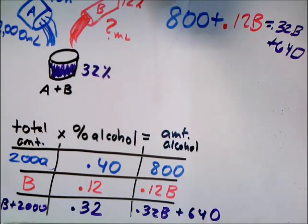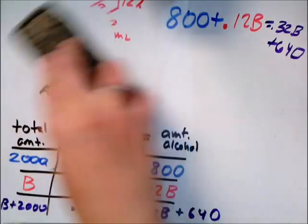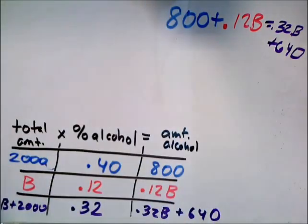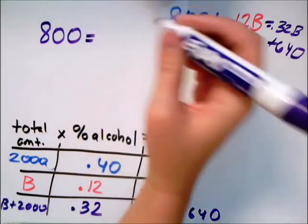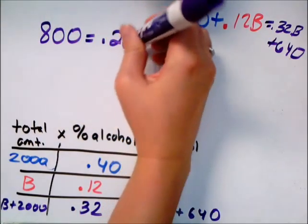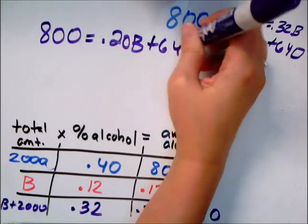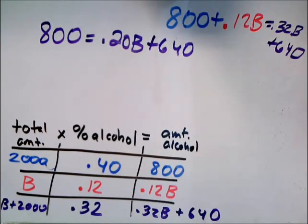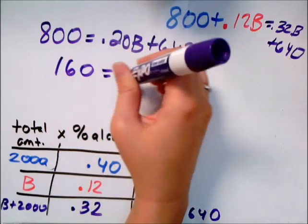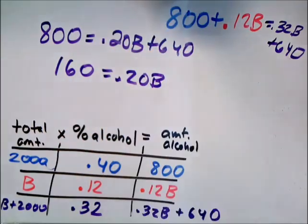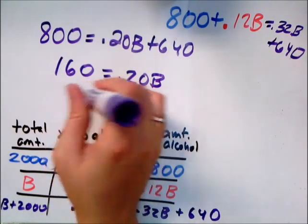Once we have an equation, we can solve it. I'd subtract 0.12B from both sides, so it'll say 800 equals 0.20B plus 640. Then you can subtract 640 from both sides. So I get 160 equals 0.2B, and divide by 0.2. So B equals 800.